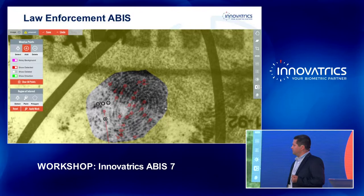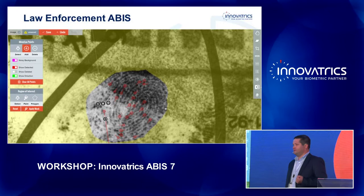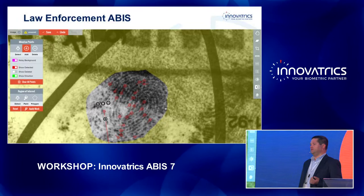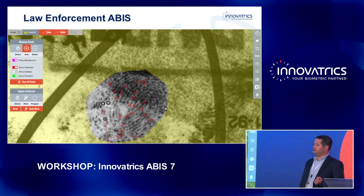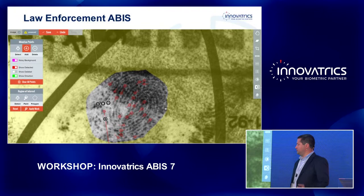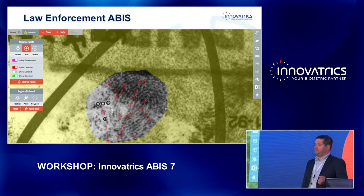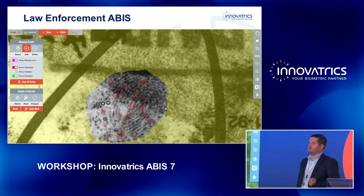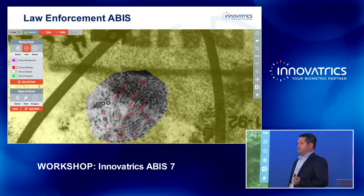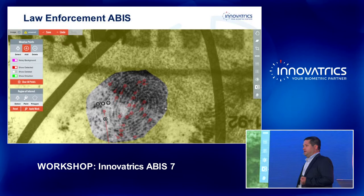Another more traditional use case, of which we have seen many examples, is law enforcement ABIS. This is where it all started — originally it was AFIS because it was mostly about fingerprints. Latent print examiners used tools to analyze fingerprints collected from crime scenes and perform automated investigation. Thanks to the introduction of AFIS, the process now takes seconds instead of hours.